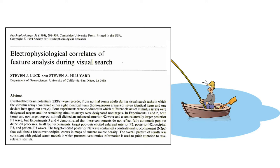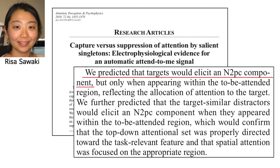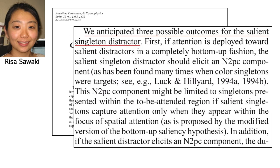For example, this paper had four experiments. Risa's study wasn't a fishing expedition. Even though she didn't expect the PDE effect that she found, she did go into the experiment with some specific predictions. So here's how the intro to experiment 1 ends. First we predicted an N2PC for the target — the large A. That was a no-brainer. Then we considered three possible outcomes for the salient singleton distractor.